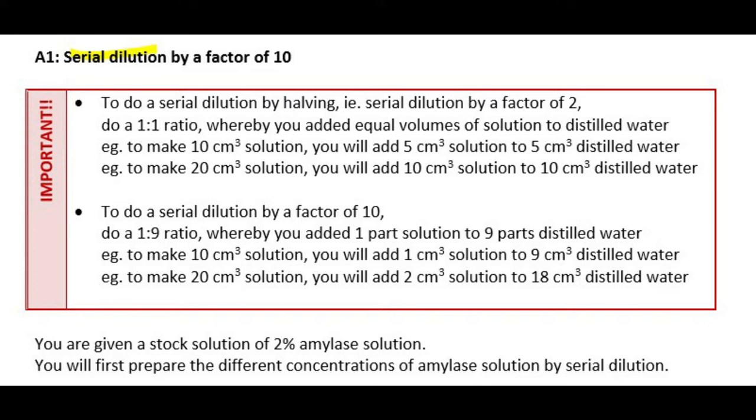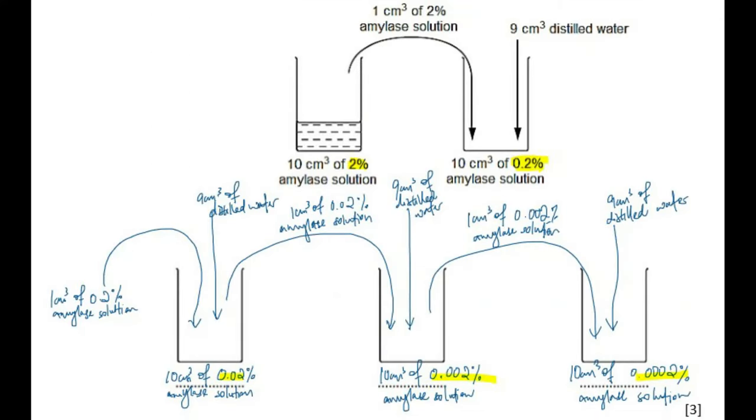To perform a serial dilution by a factor of 10, we usually use a 1 to 9 ratio, whereby we add one part of the solution, the previous concentration, to 9 parts of distilled water. Therefore, our calculation should look something like this.